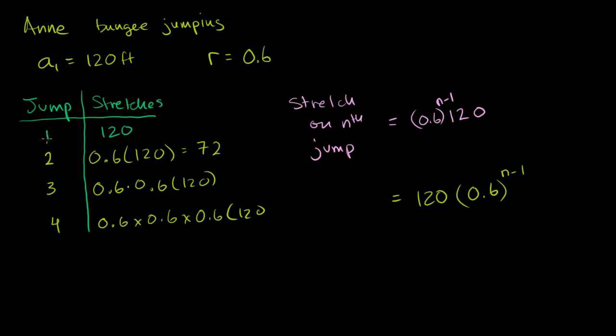Well, we're defining the first jump as stretching 120 feet. So when you put n is equal to 1 here, you get 1 minus 1, 0. So you have 0.6 to the 0th power, so you just get a 1 here, and that's exactly what happened on the first jump.